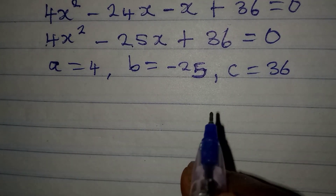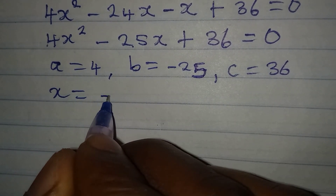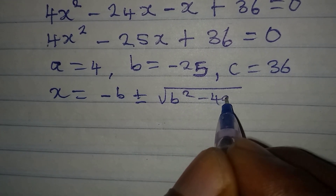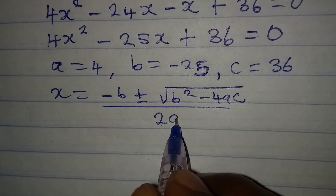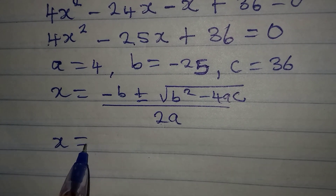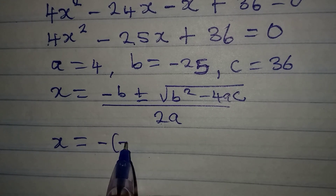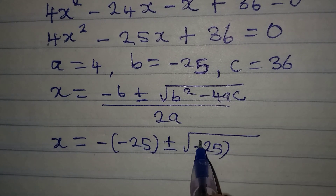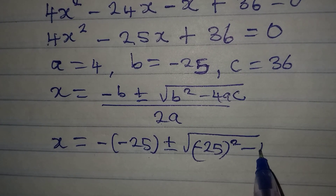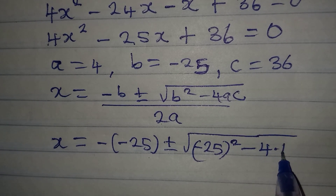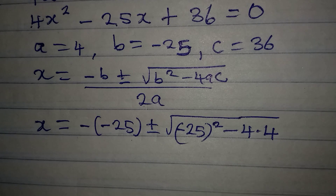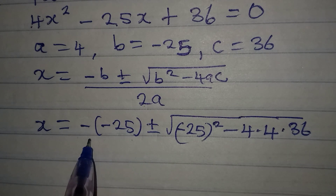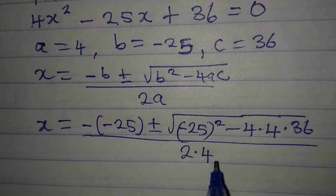The formula is x equals minus b plus or minus the square root of b squared minus 4ac, all over 2a. Substituting: x equals minus(minus 25) plus or minus the square root of (minus 25) squared minus 4 times 4 times 36, all over 2 times 4.